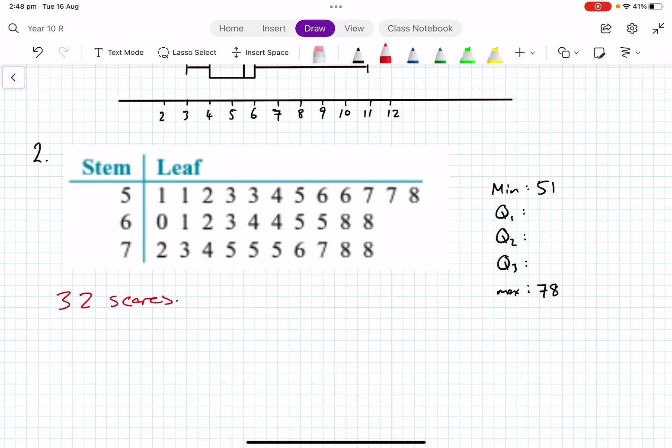Okay, so 32 scores. Good. So we're looking for, well, 16 scores and then 17. So if we count off, go one, two, three, four, five, six, seven, eight, nine, ten, eleven, twelve, thirteen, fourteen, fifteen, sixteen. That is halfway, that's my Q2. So we've got 16 scores here, then another 16 scores.